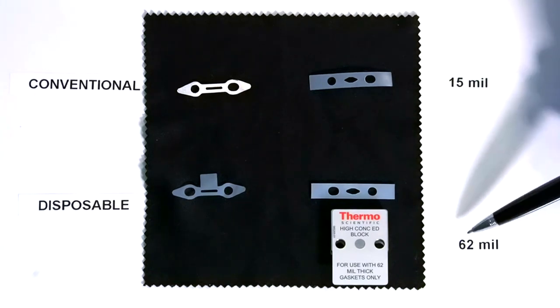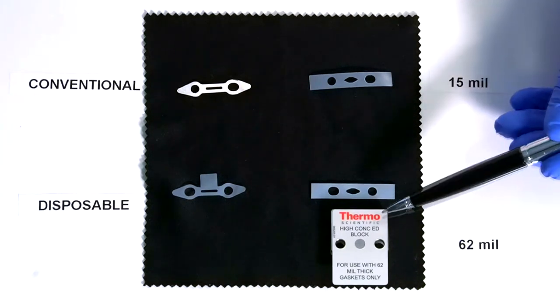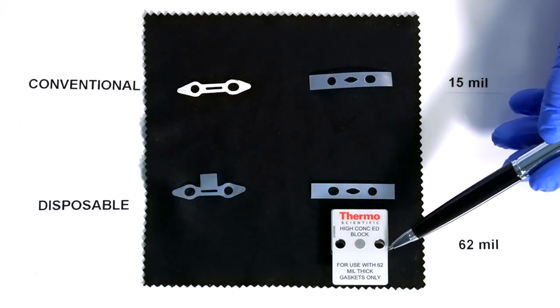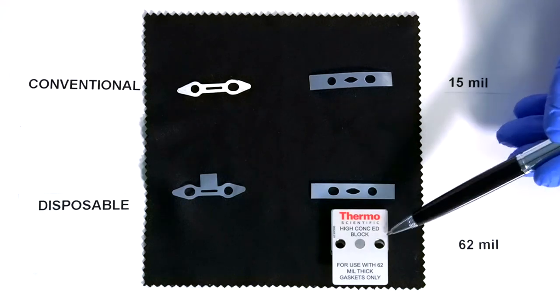It's just important to remember when you use the 62 mil one with the disposable electrodes that we do need to use a special spacer block which is designed to fit with that thicker gasket so the cell still fits together correctly.